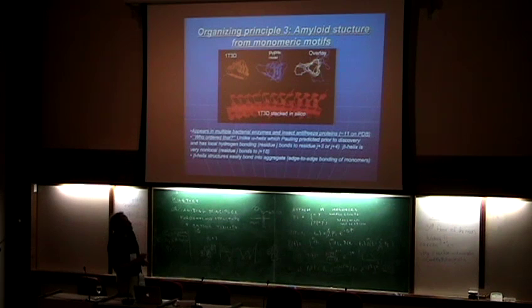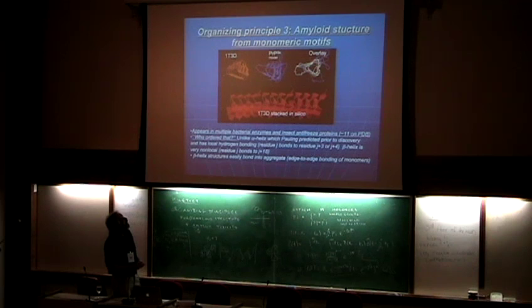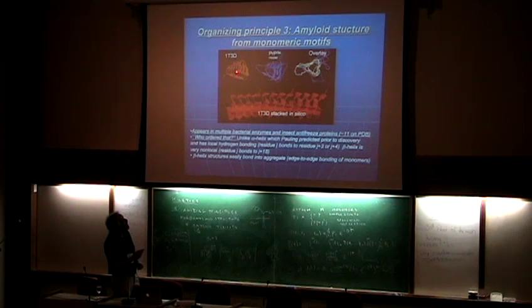These beta helical structures can be left-handed or right-handed. The left-handed are particularly beautiful; the right-handed are not as beautiful. The left-handed have these triangular cross-sections. They've been observed in some bacterial enzymes, where they inevitably form trimers, and they've been observed in some insect antifreeze proteins. They have 18 amino acids per repeat unit in an ideal beta helix, and about four residues per beta strand on each side of the triangle.